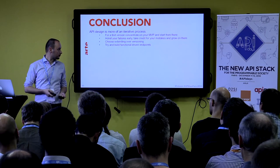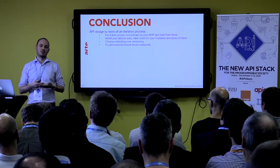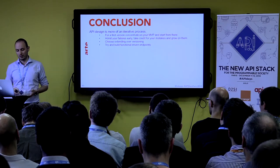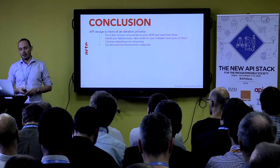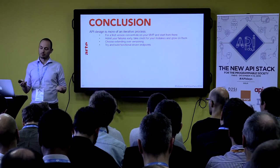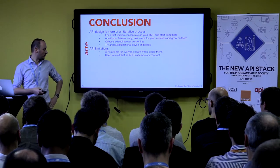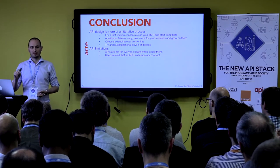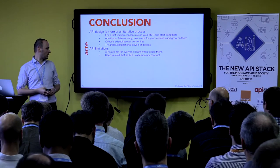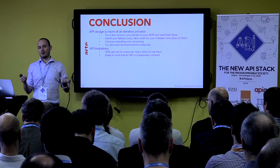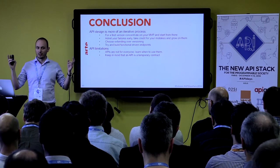In conclusion: of course, your first API is not going to be perfect. For your first version, concentrate on an MVP — it's more than enough. Admit your failures early so that you can work on them, make a second iteration, and so on. Choosing extending over versioning is much better for our use case anyway. Functionally-driven endpoints really make it easier for developers to get the data they need without thinking about how the request should look. A few limitations: APIs are not for everyone — I love APIs, but know when to use an API and when to use standard RSS feeds or something old style. It also works.